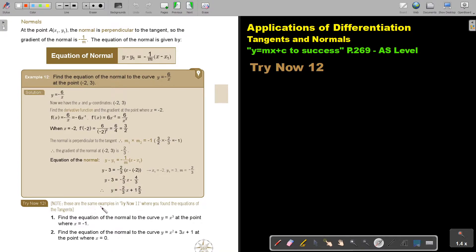Just take note that these are the same examples in Try Now 11 where we find the equation of the tangent. The only difference is we're now going to find the equation of the normal. So let's do number 2 again. We did it in the previous video, but then we were finding the tangent and not the normal as indicated here. Let's start.